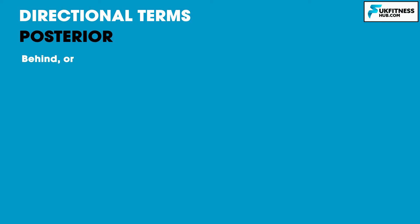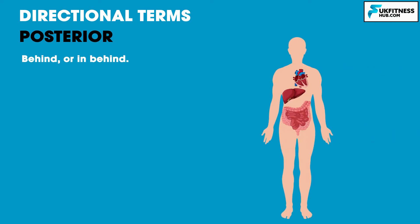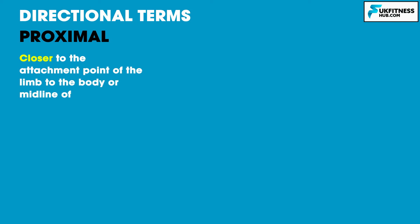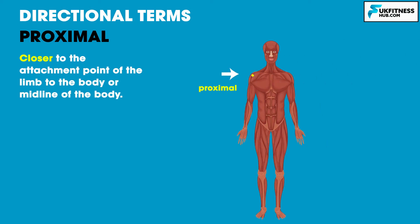Posterior means behind or in behind. The heart, for example, is posterior to the rib cage as it is behind the rib cage. Proximal means closer to the attachment point of the limb to the midline of the body. For example, the shoulder is proximal to the elbow.